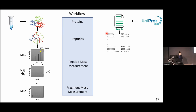After the in silico digestion, from a list of proteins I will have a very large list of peptides, and each of those peptides will have a mass. Since from the MS1 level we know the mass of the peptide we isolated for MS/MS fragmentation, we can use that information to go from this very large list of peptides to a smaller list of candidate peptides for identification.